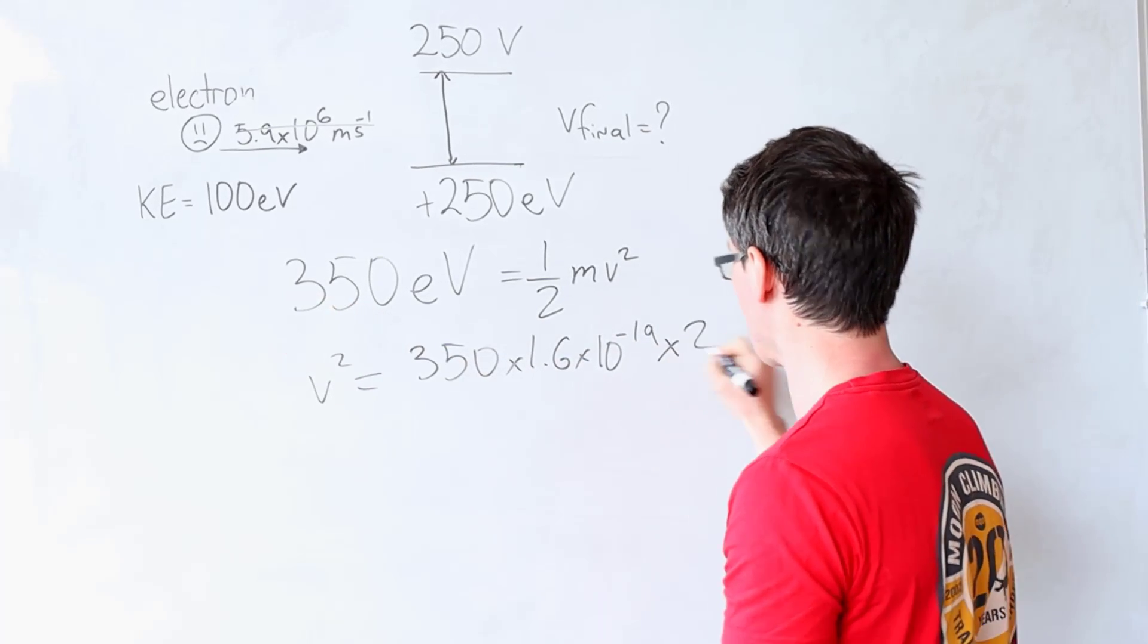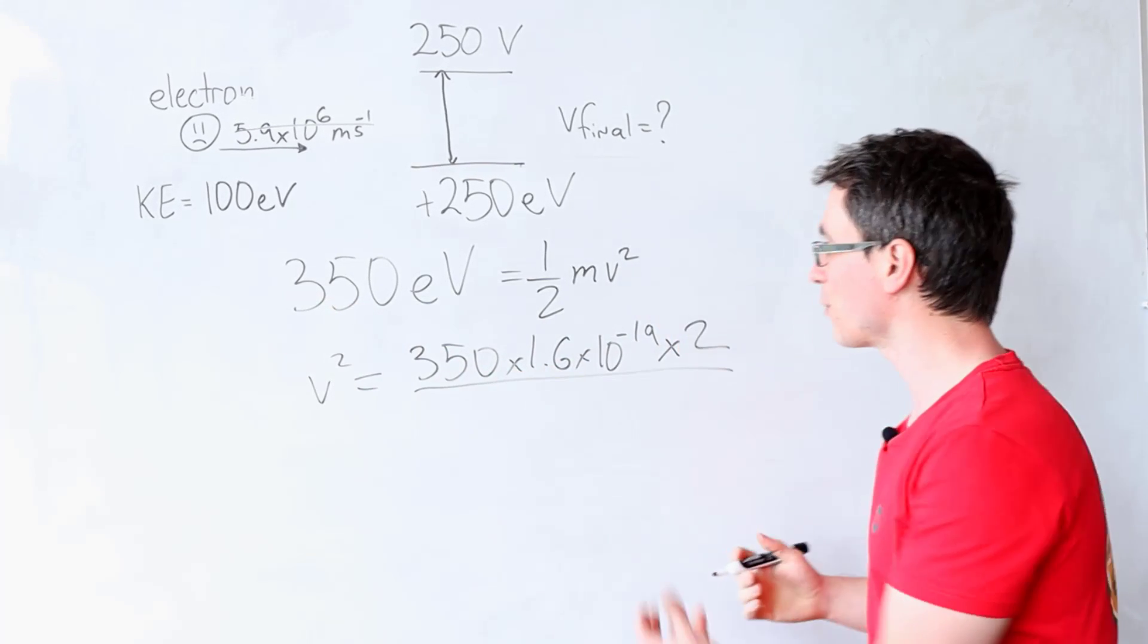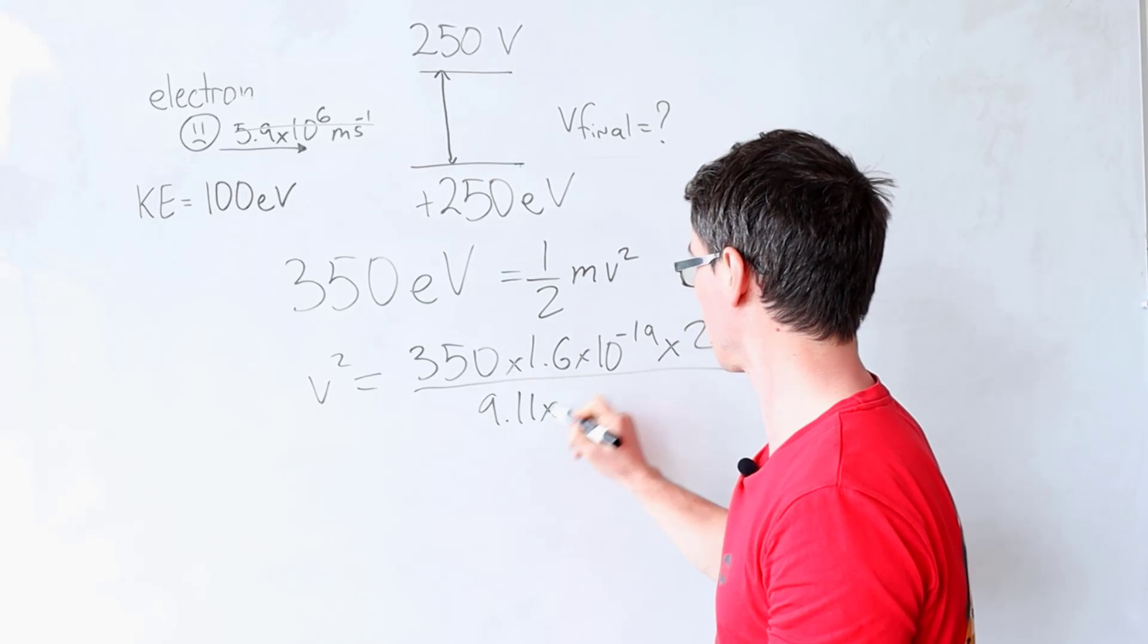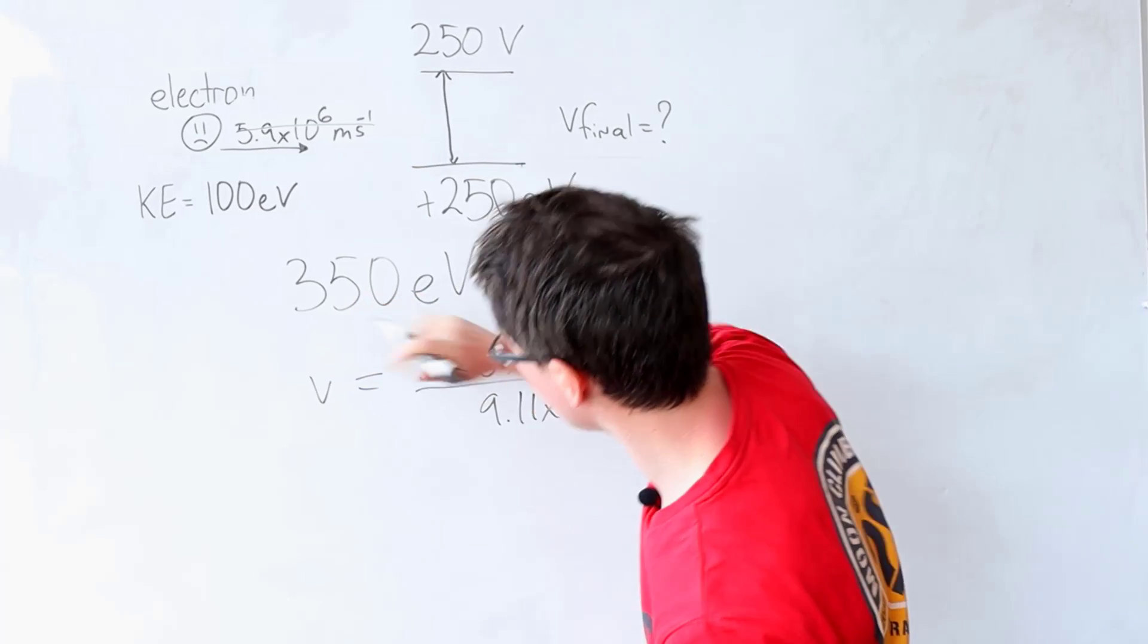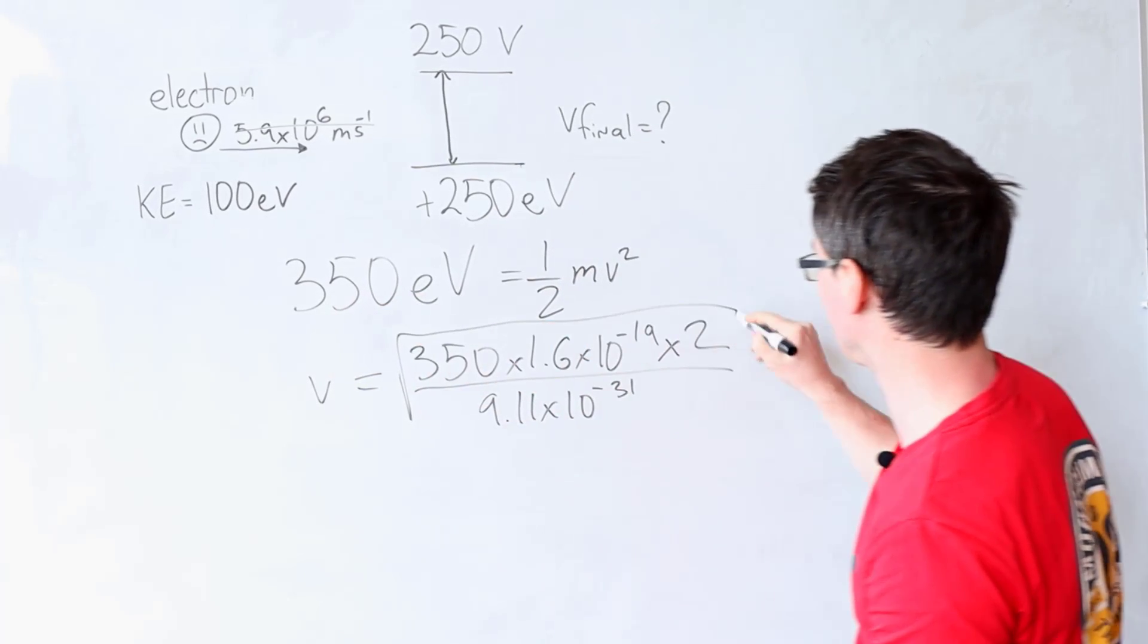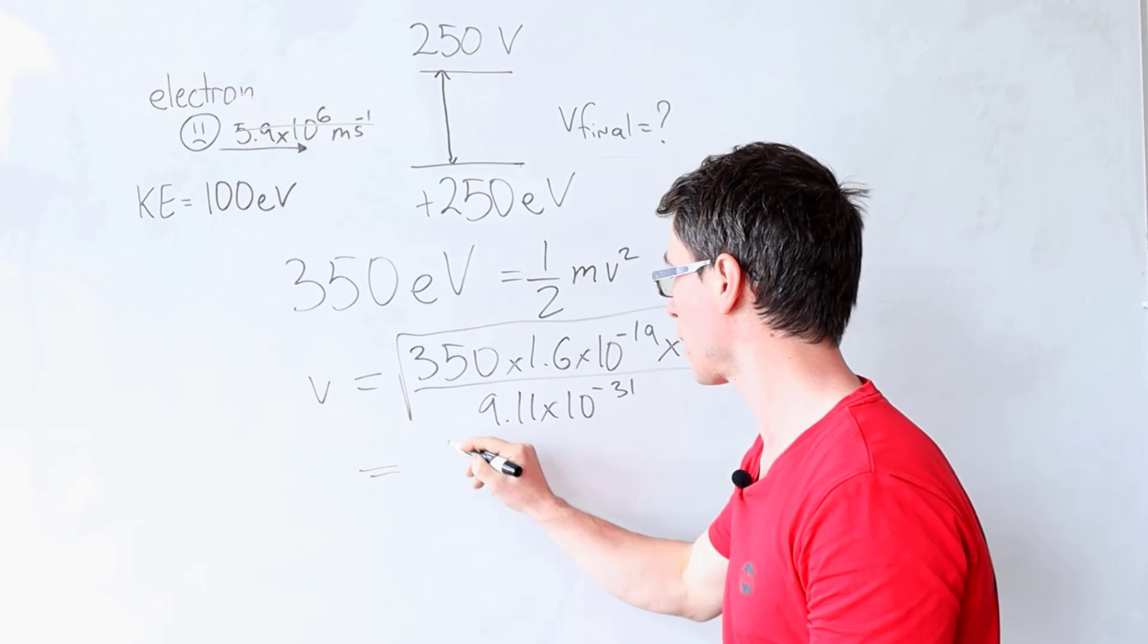Let's bring this factor of 2 here, and then we're going to divide by the mass, which is 9.11 times 10 to the power of minus 31 kilograms.